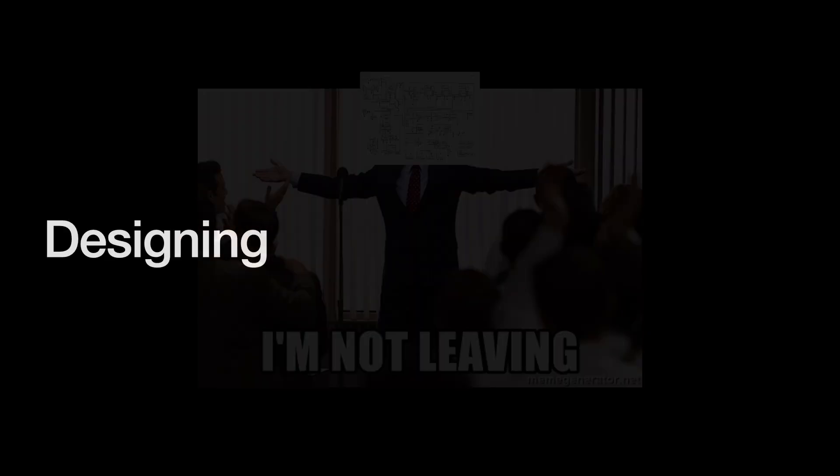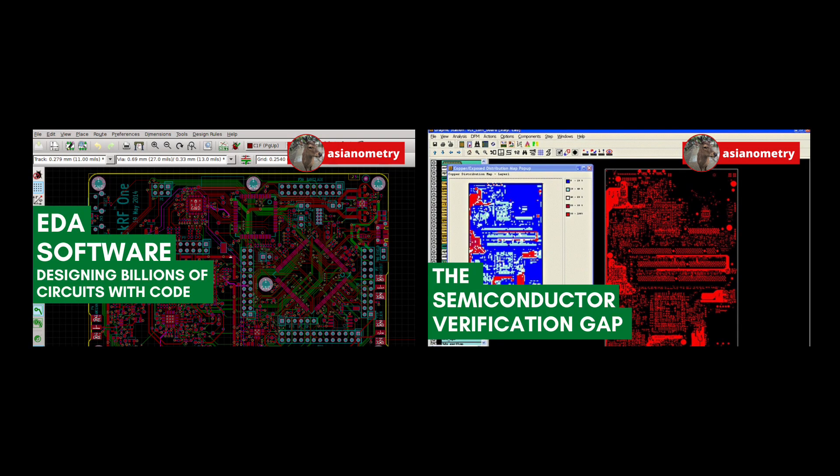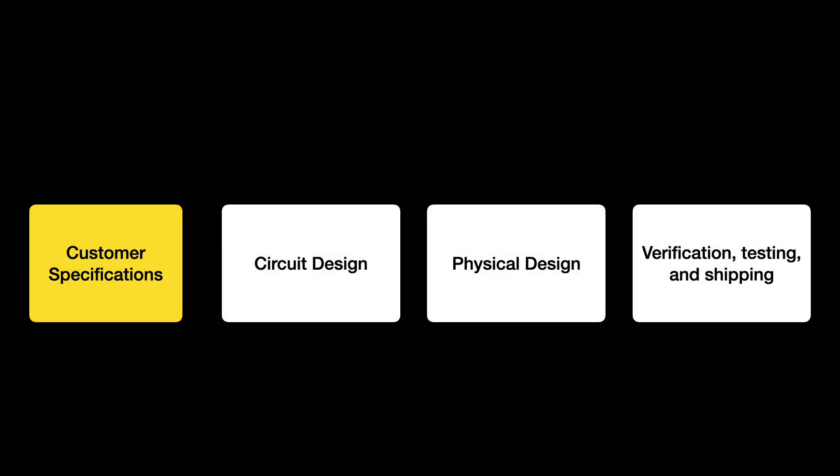Before we talk analog chip design, I want to briefly go over how we design semiconductors in both the digital and analog worlds. I recommend watching some of the other videos I did on semiconductor design, but I'm just going to hit the main beats so that we are all on an even footing. First, you meet with the customer and decide their specifications. You translate those specifications into subsystems and components.